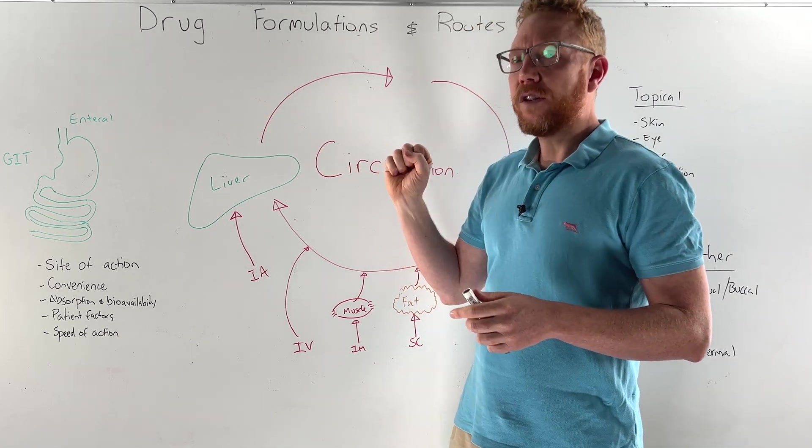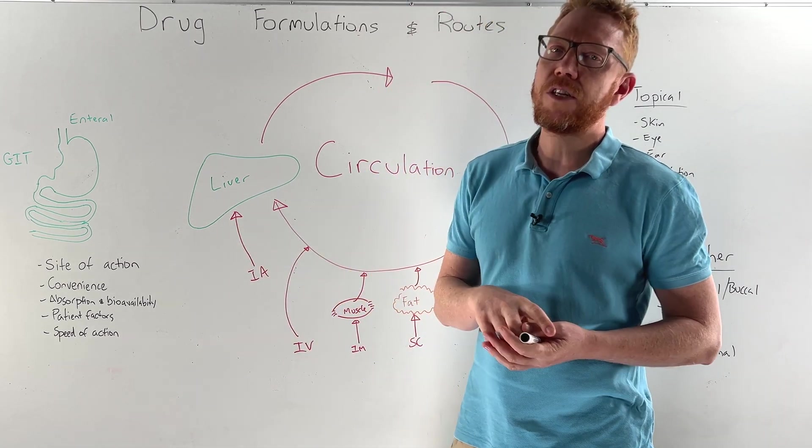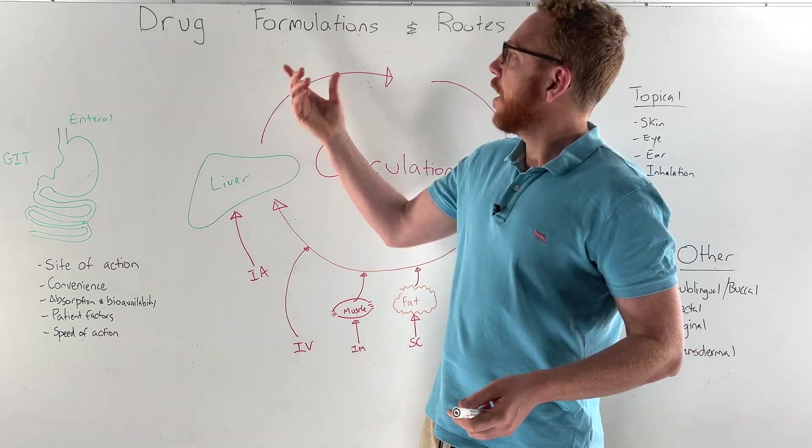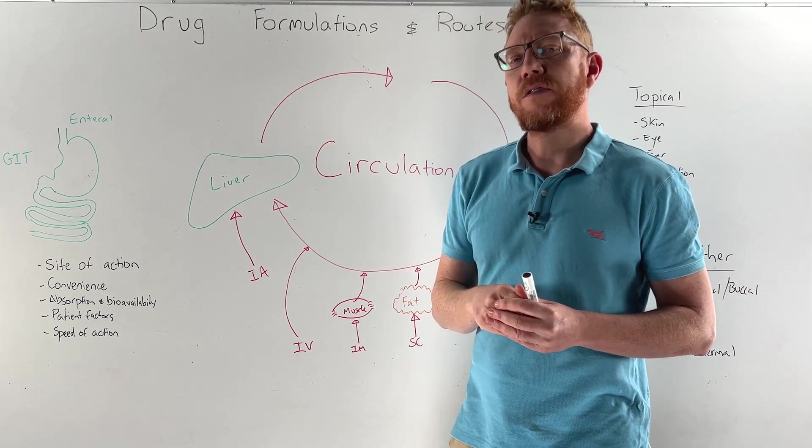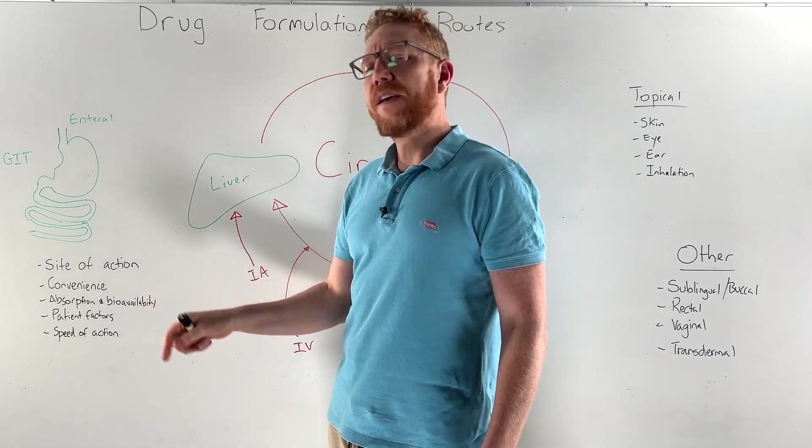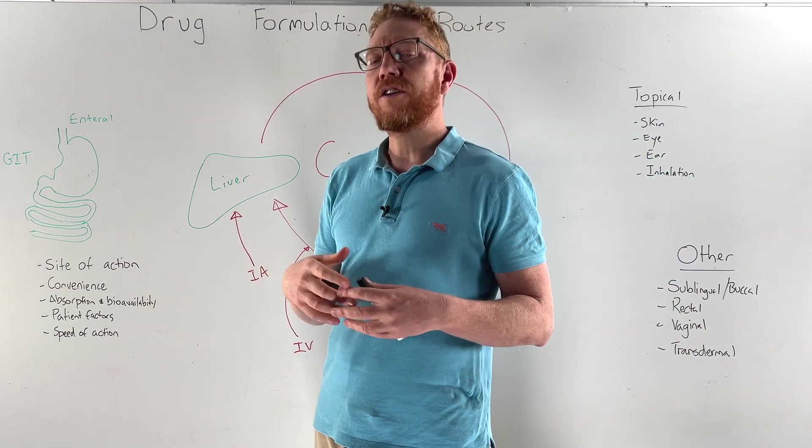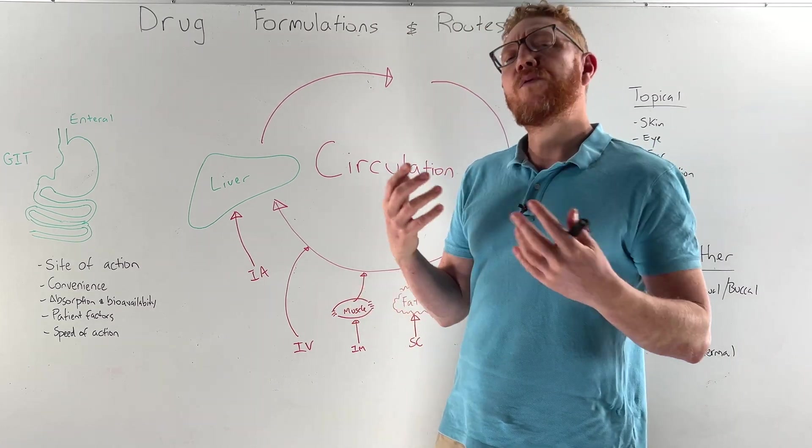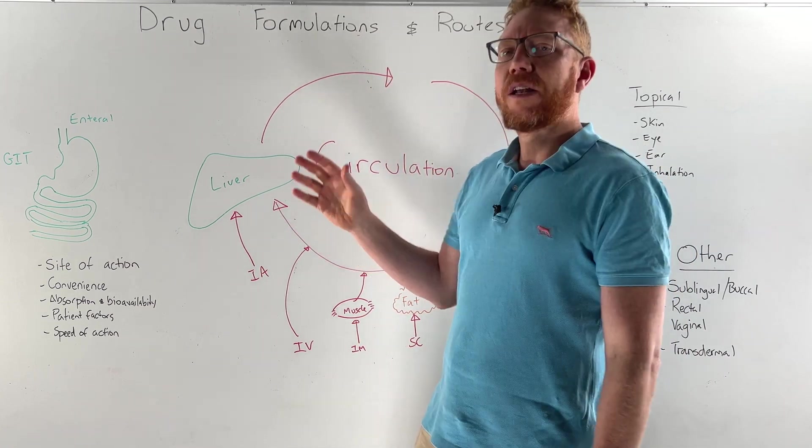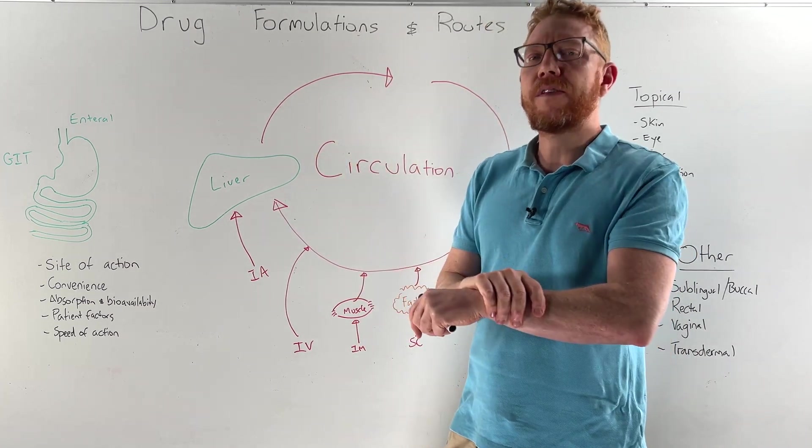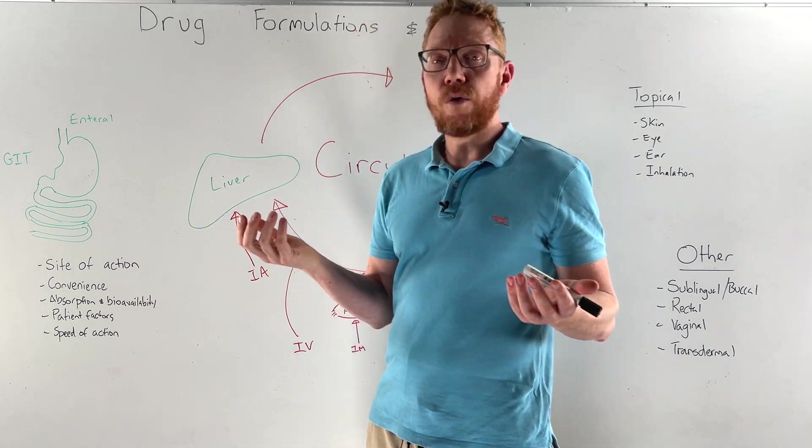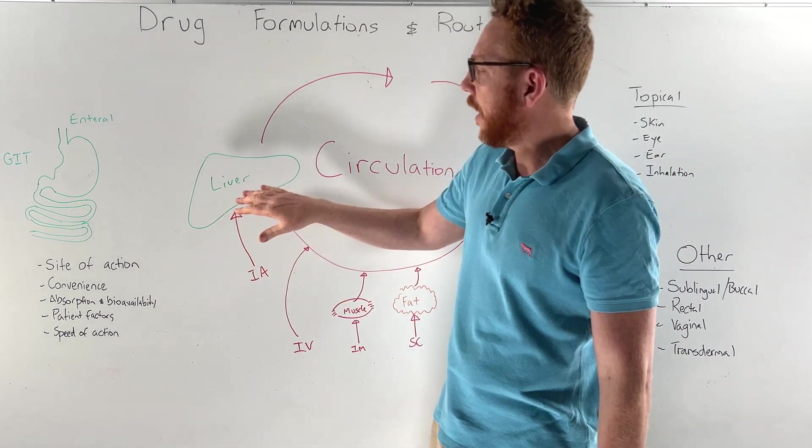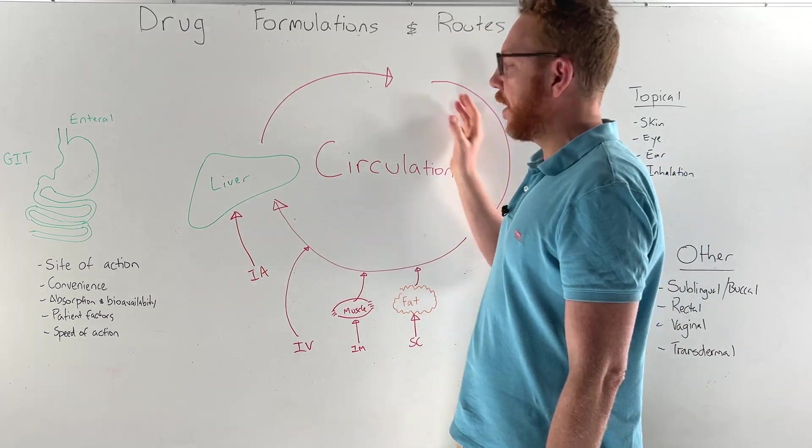Before we get into the different locations I want to go through considerations that pharmacologists and health professionals consider when they choose formulations. Firstly we need to consider the site of action - where is the drug going to work? If we've got dermatitis or eczema on the skin do we really need to give a drug that goes into the circulation or can we just apply it on top of the skin? If it's a blood pressure medication it needs to go to blood vessels. If it's a cholesterol medication it needs to go to the liver. In that case you probably want to bring it into the circulation.